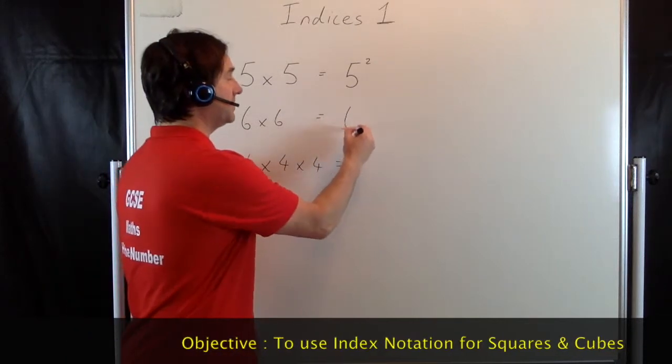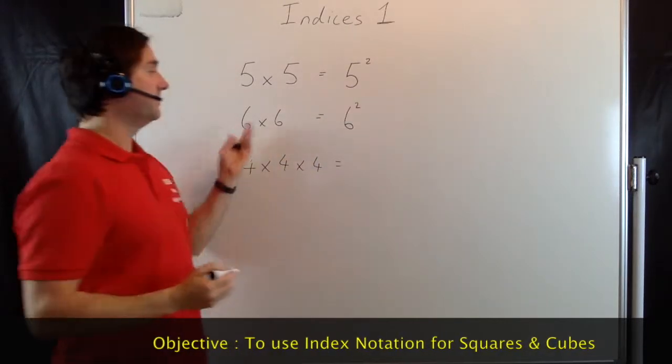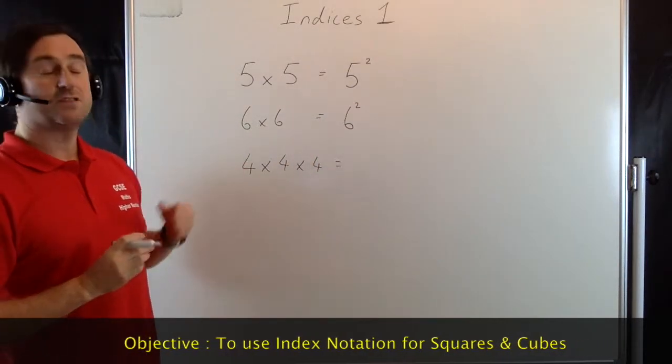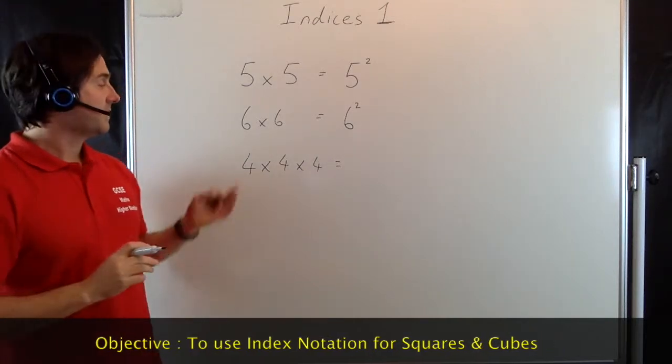or 6 raised to the power of 2. If we have a look at the third one here though, 4 × 4 × 4, we're now multiplying this by 4 and by 4 again.